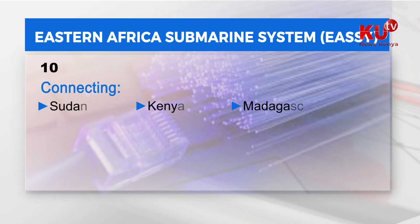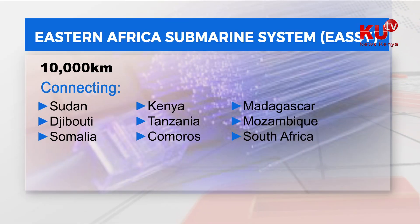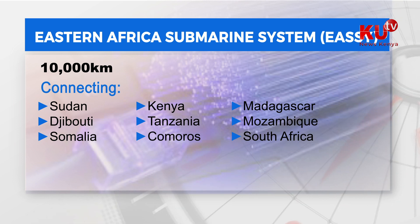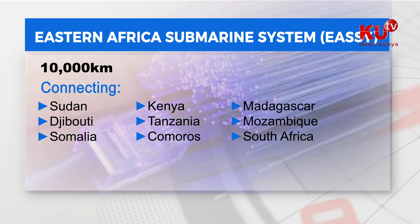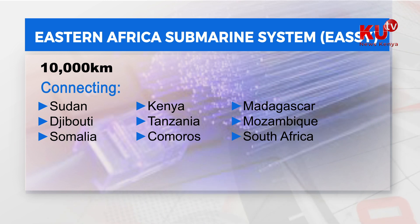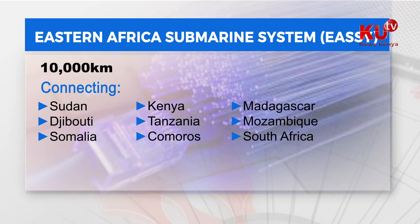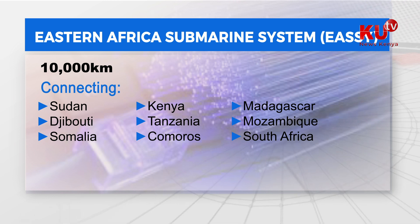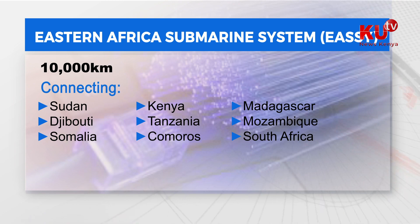The Eastern African Submarine System, EASSy, is a 10,000 km submarine cable system along the East Africa coast with nine landing stations in Sudan, Djibouti, Somalia, Kenya, Tanzania, Comoros, Madagascar, Mozambique, and South Africa. It provides a backhaul system for at least 12 landlocked countries, enabling wide coverage in the Eastern African region. The EASSy cable system became operational in July 2010.